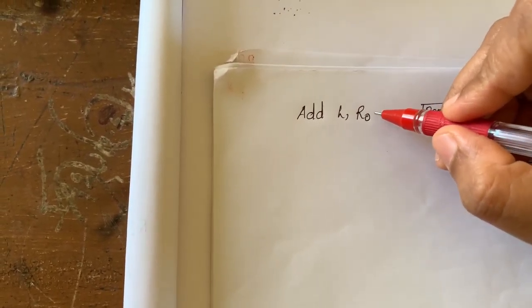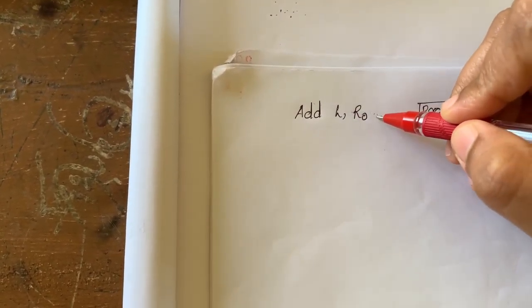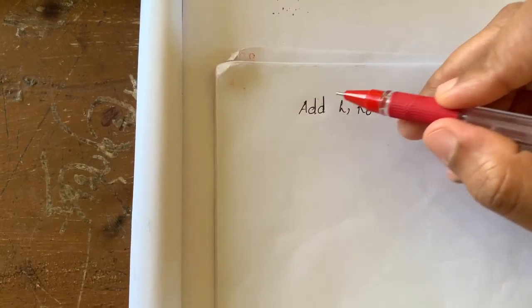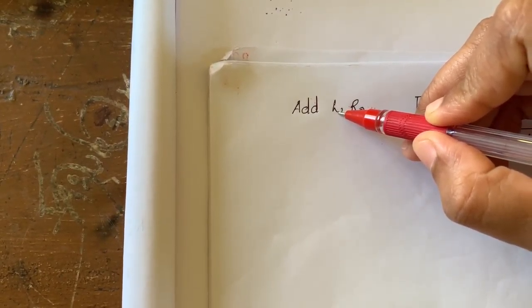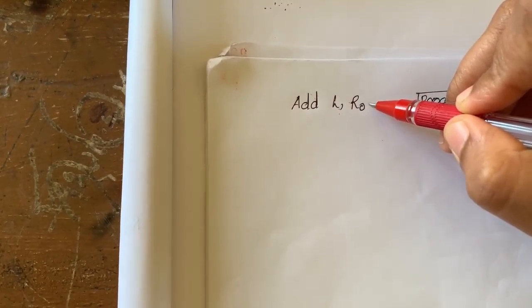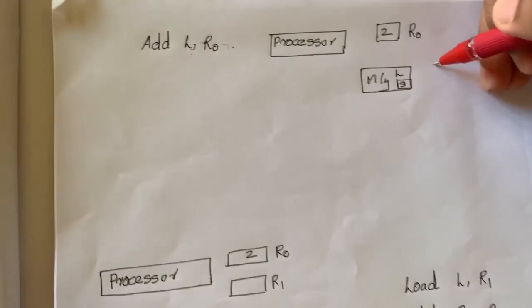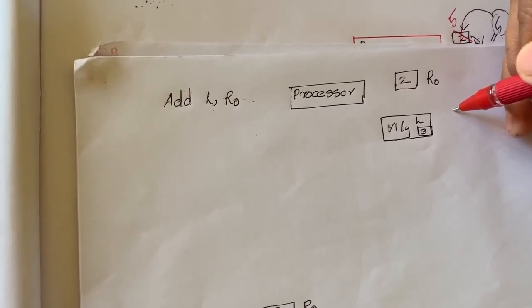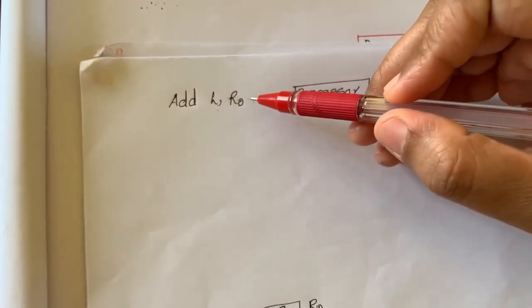Consider a particular situation: the processor is currently executing a program which is present in the memory unit. We have already defined that a program contains a list of instructions. So in the next time instant, the processor is going to execute a particular instruction — consider that instruction as: Add L, R0.